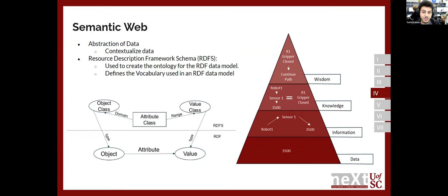Once we have this information, we can start creating insights that are implicit — not usually explicitly there. Now that we have contextualized data, we can reason that a value from a sensor on a robot can entail that the gripper on this robot is closed. That is knowledge — insights we can use to either continue the manufacturing process, stop it, or know if something is wrong. After you have this knowledge and know the gripper is closed, you can continue your path. This is a small example of how semantic web can be used to move manufacturing processes forward.